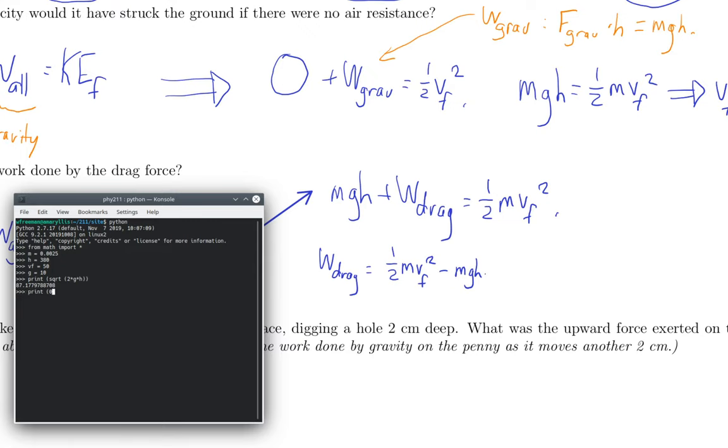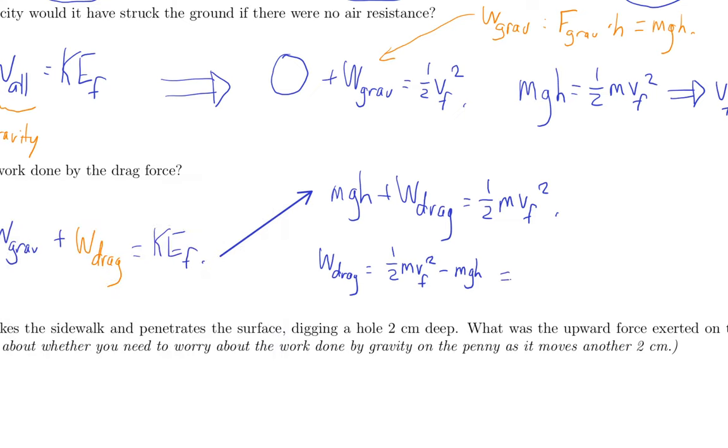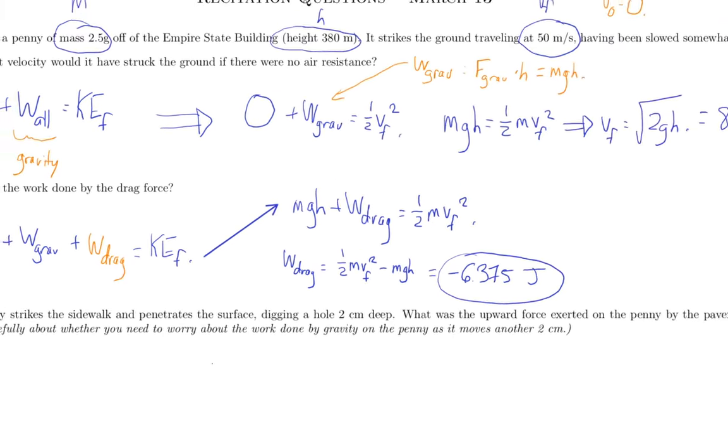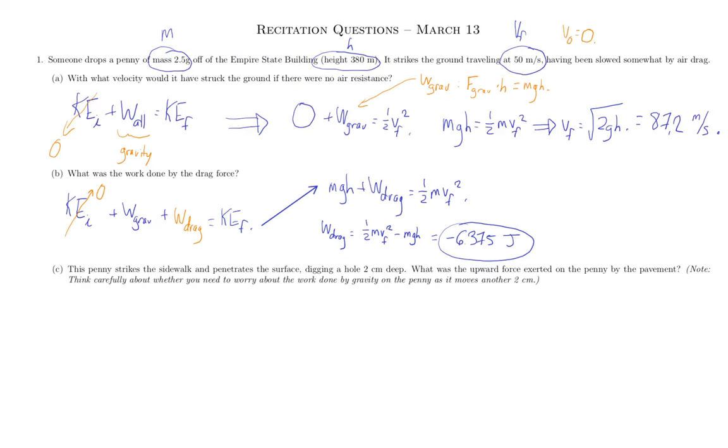So now going back to my calculator window, we want to print one-half times m times vf squared, so a double star means exponentiation in Python, minus m times g times h, and I get a negative number. This is what you expect since this thing is falling downward. Air drag pushes it upward, but it's moving down, so we expect air drag to do negative work because it's a force in the opposite direction of the motion, and also because it slows something down. So when I did the math, this was minus 6.375 joules. Joule is the SI unit of work or energy. So that's part B.